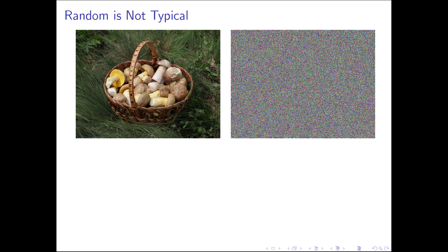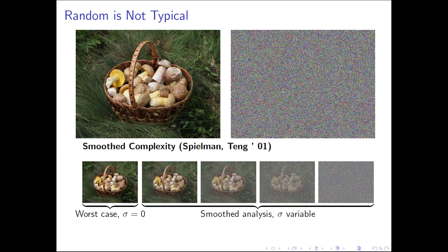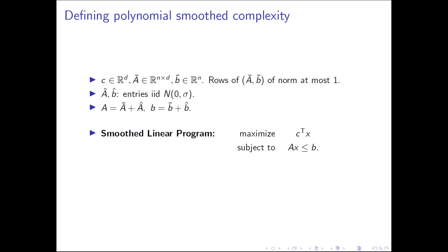This motivated Sanktoh, Spielman, and Teng to push further. The idea of smoothed analysis is to interpolate between worst case and average case: you start from a typical instance and allow yourself to add random noise, parametrizing instances by how much noise is added. As you allow more random noise, you get back to the completely average case. Smoothed analysis is a way to interpolate between worst-case and average-case analysis.